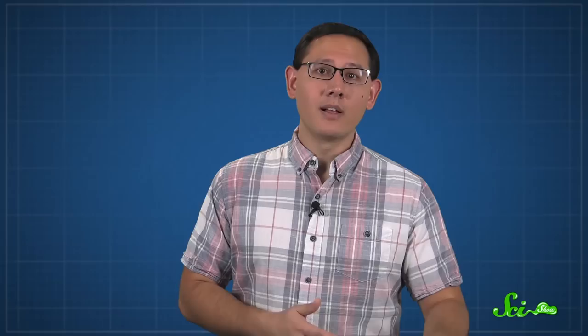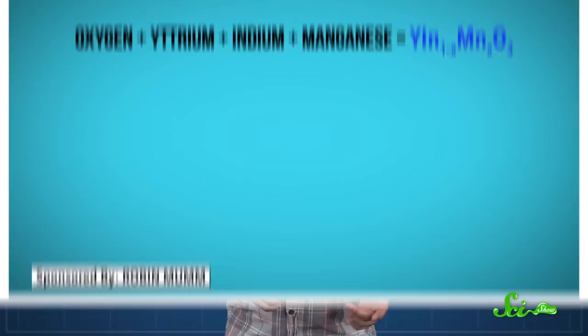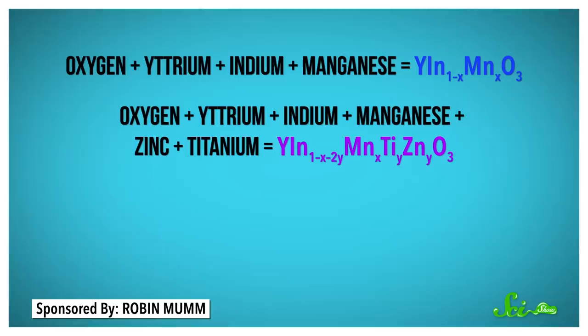It's also non-toxic and reflects heat, which means it doesn't just look pretty, it could be used to paint roofs and keep houses cool. The same team has since reported that if they add zinc and titanium, they can make purples. And if they replace the manganese atoms with copper or iron, they can make greens or oranges with similar properties.